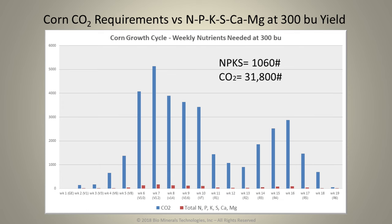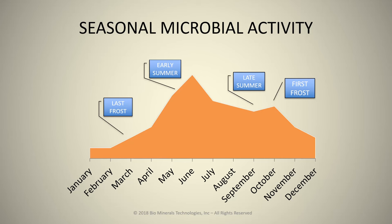Now let's look at the carbon dioxide requirements for the same 300-bushel corn. Almost 32,000 pounds of carbon dioxide is required to grow that 300-bushel corn crop, and I need scarcely over 1,000 pounds of mineral. So this is the ratio that we're not seeing. We don't even look at this. We farm completely absent of the CO2 requirement for our plants.